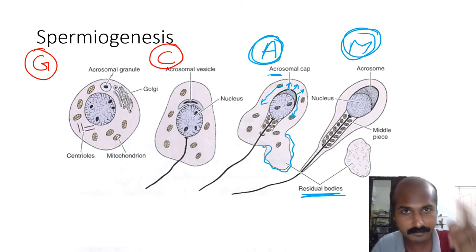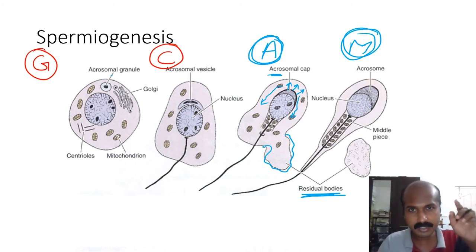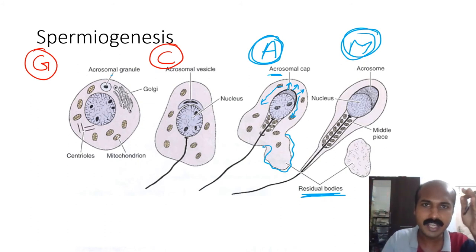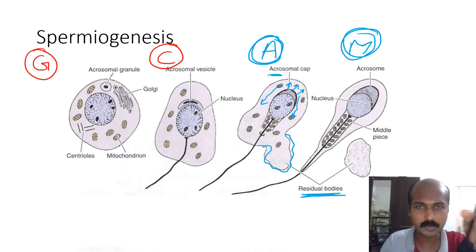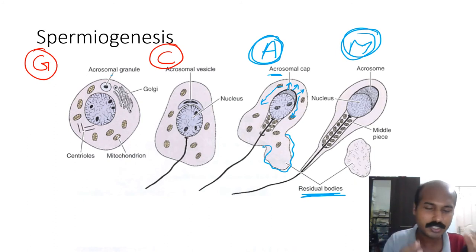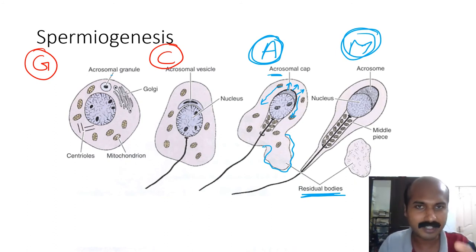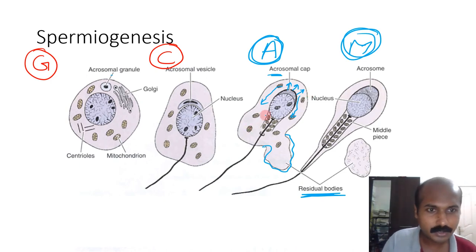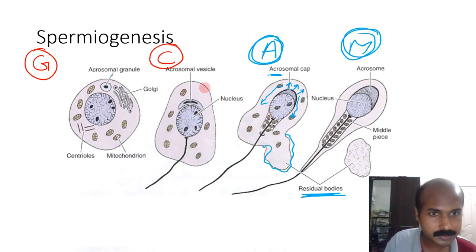This close arrangement is critical for fertilization. The spermatozoon must penetrate multiple barriers and enter the oocyte cytoplasm. All these structural features are the biological 'weapons' that enable the spermatozoon to fertilize the egg.